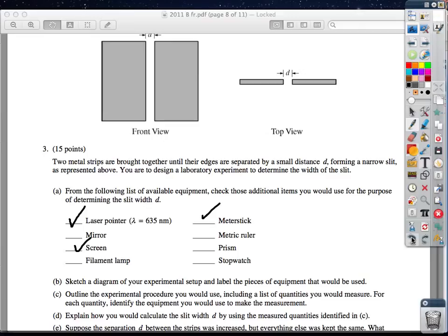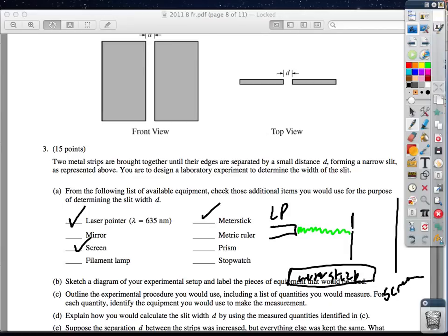I would take this stuff and then sketch a diagram of the experiment. So I would shoot the laser pointer. I think 635 is green, I'm guessing. Shoot the laser pointer at the slits or at the slit here. Then I'd have my screen back here. And then I'd have the meter stick right here. And you literally have to do this. Please be aware. Sketch a diagram of the experiment setup and label the pieces of equipment that would be used.